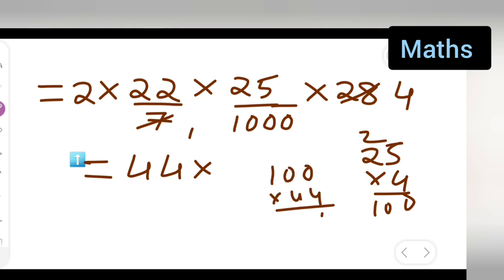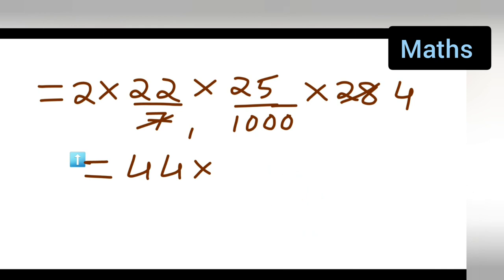You will get 44 × 100. Now we have to write it as 4400/1000.